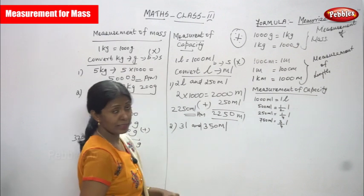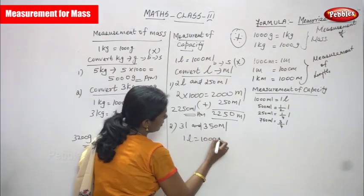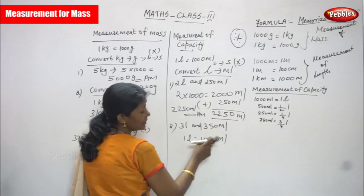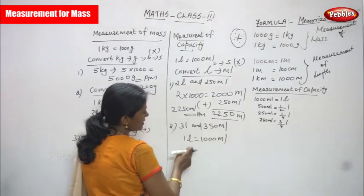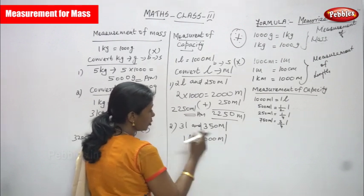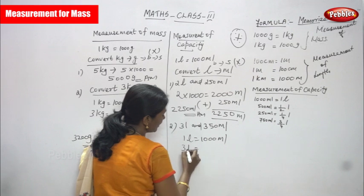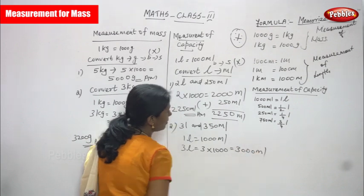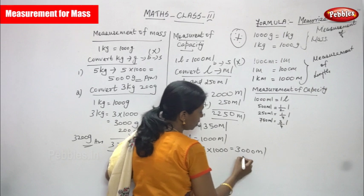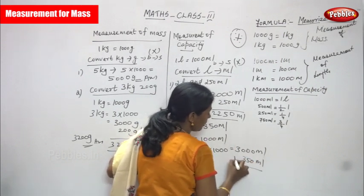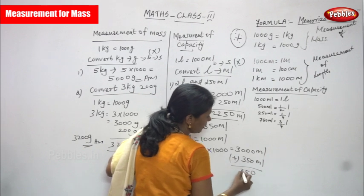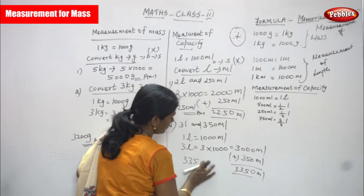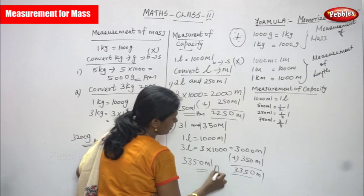Next: 3 liter and 350 ml. 1 liter is equal to 1000 ml. Liter is a bigger unit and milliliter is a smaller unit, so bigger to smaller means multiply by 1000. So 3 into 1000 gives 3000 ml. Already 350 ml is given, so you add together. The answer is 3350 ml.